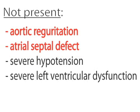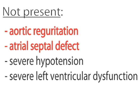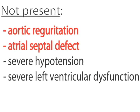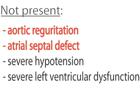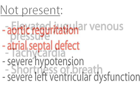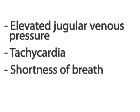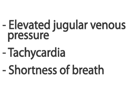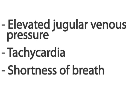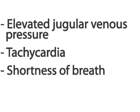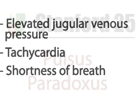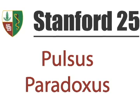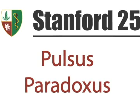Importantly, Pulsus Paradoxus may not be present despite a patient being in cardiac tamponade in certain situations such as aortic regurgitation and atrial septal defect. In addition to other findings such as an elevated jugular venous pressure, tachycardia, and shortness of breath, Pulsus Paradoxus can serve as a valuable tool in the evaluation of a patient with suspected cardiac tamponade. This has been the Stanford 25 video on Pulsus Paradoxus.